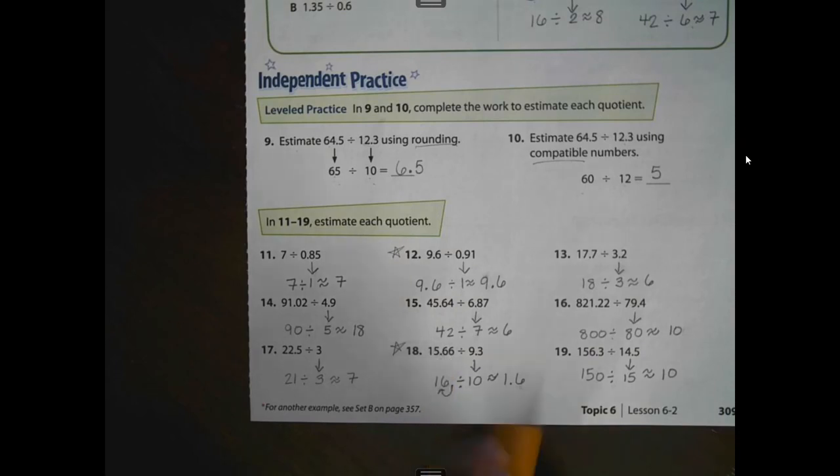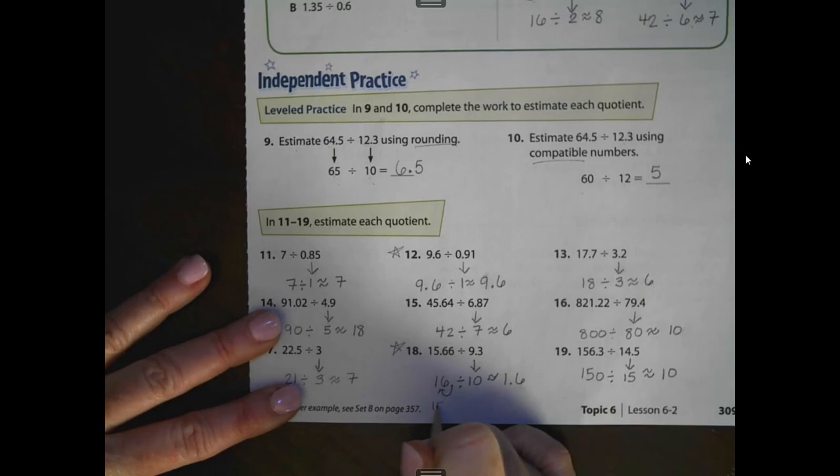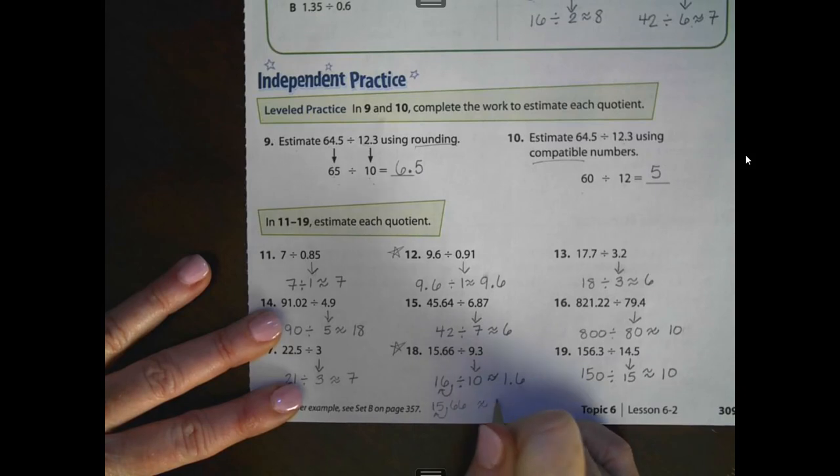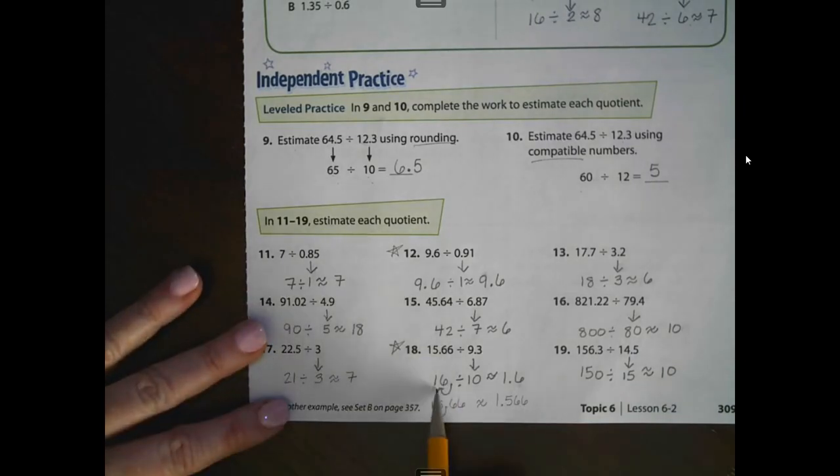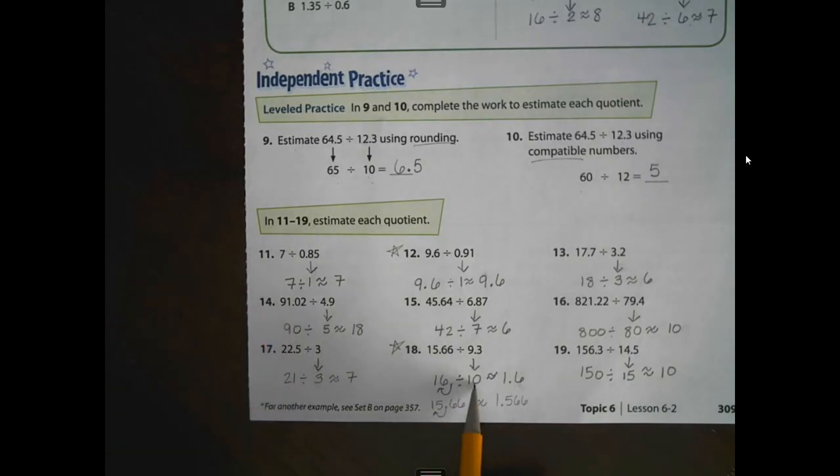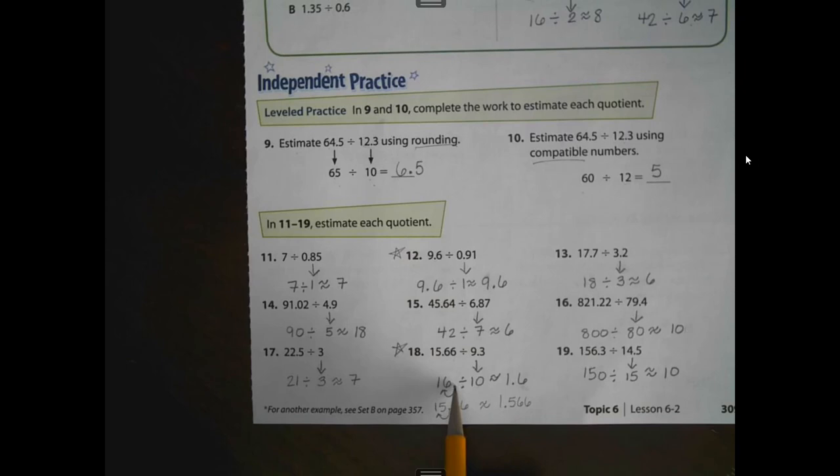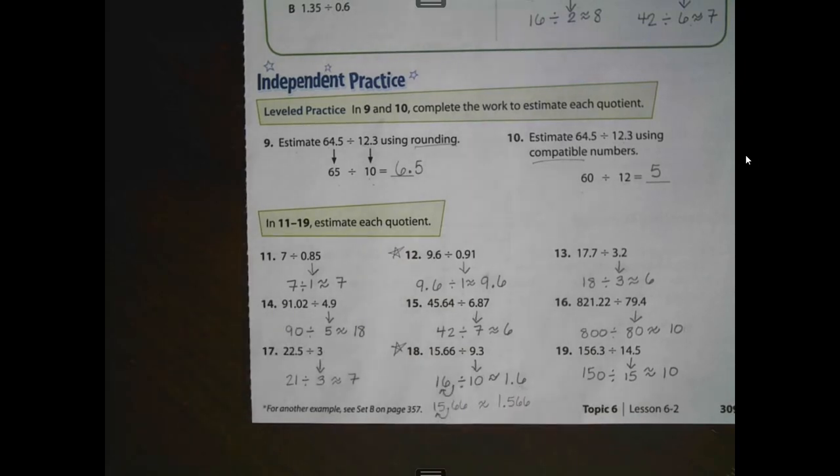But if you understood and mastered yesterday's concept of dividing by powers of 10, you would have noticed you could have left this – you could have rounded this 15 and 66 hundredths. Actually, you could have left it itself. I even did something a little different. And if you multiply or divided by a power of 10, you could have had the estimate 1 and 566 thousandths. I made it 16, but I still use that same concept and divided by 10 to get 1 and 6 tenths.